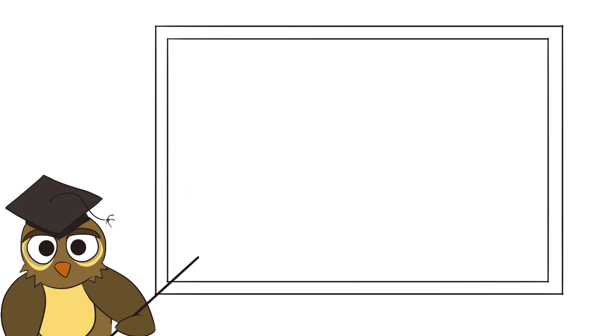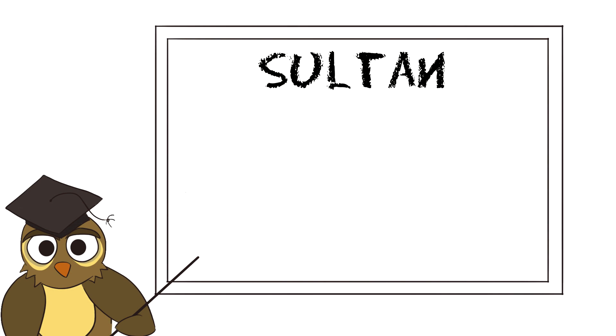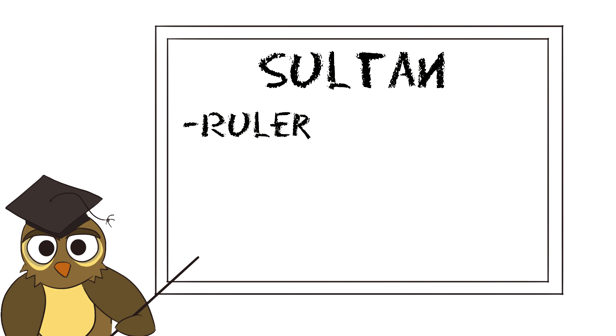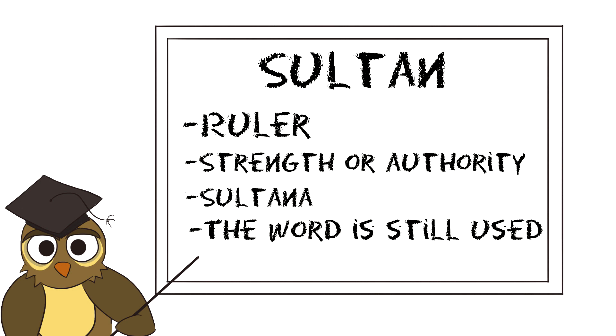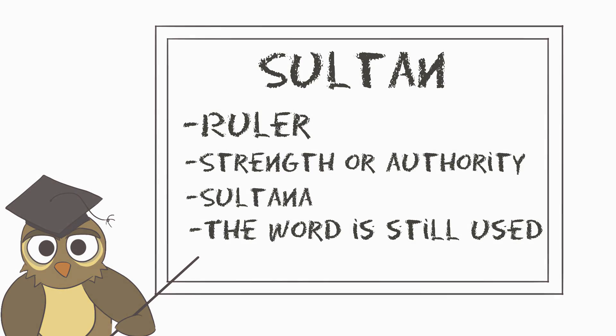To conclude, sultan basically means ruler — the word means strength or authority. The female form of the word is sultana, and there are still a number of sultans in the Middle East and Southeast Asia.